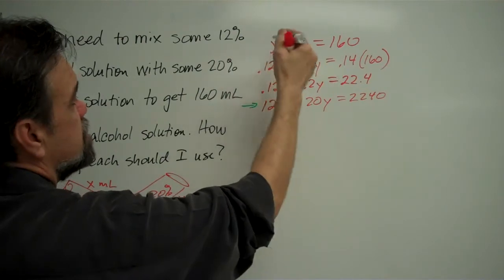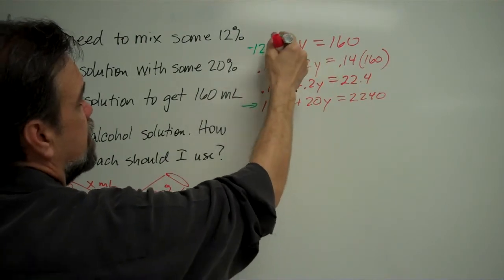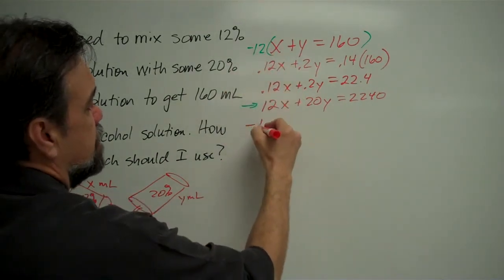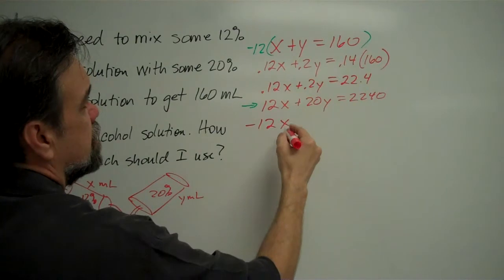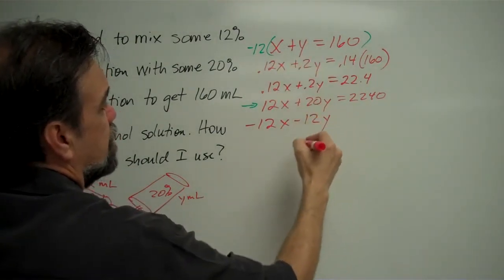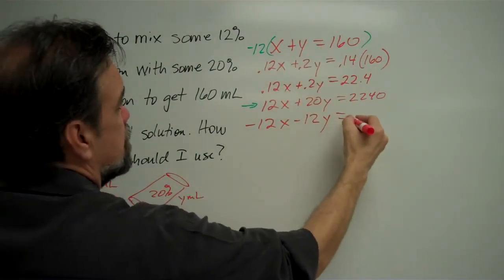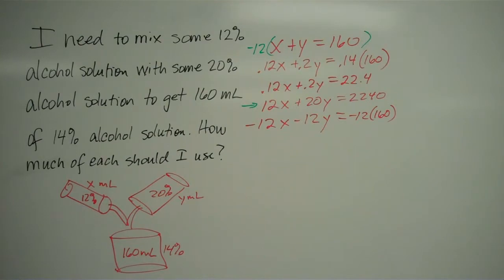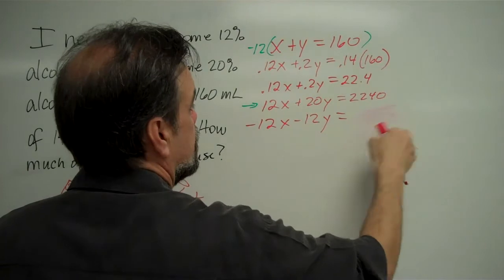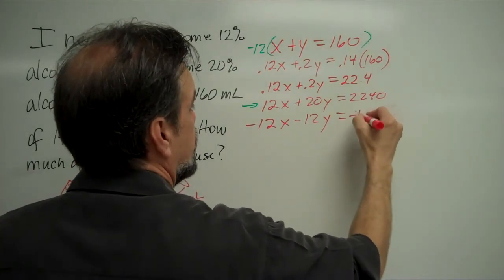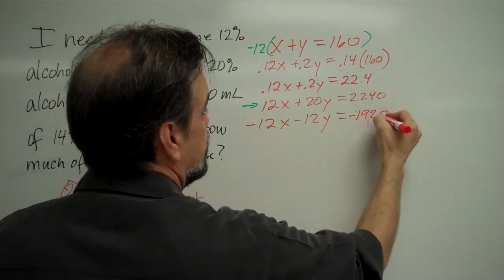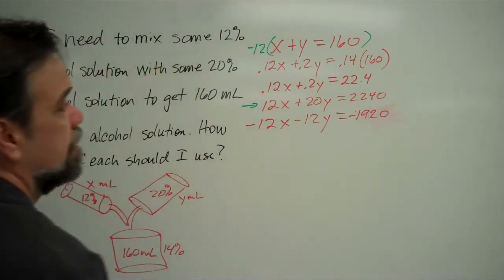Let's take our top equation and let's multiply it by negative 12. Okay? So that's going to get us negative 12x minus 12y equals negative 12 times 160. And upon further calculation, that turns out to be negative 1,960. Is that right? Nope. 1,920. There we go. Okay?